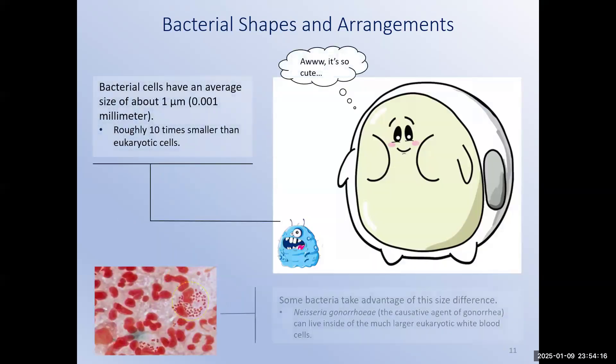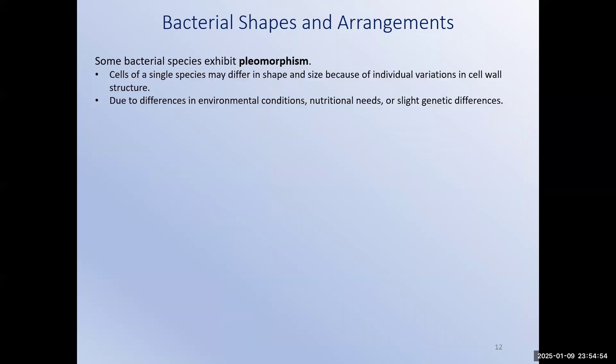The bacterial cells are small compared to our cells, about 10 times smaller. Some bacteria use this size difference to their advantage. There are types of bacteria that make us sick that are actually able to live inside of our cells. Some of them would not be able to survive very long outside of our cells. We call these bacteria obligate intracellular parasites. So as an example, the bacteria that causes the sexually transmitted infection gonorrhea is able to live inside of the white blood cells of our immune system. They hide out in the very cells that are supposed to kill them. Neat little trick. It's only possible due to their small size.